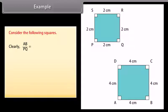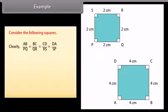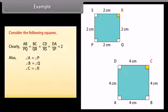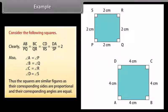Example: consider the following squares. Clearly AB/PQ = BC/QR = CD/RS = DA/SP = 2. Also, angle A = angle P, angle B = angle Q, angle C = angle R, angle D = angle S. Thus, these squares are similar figures as their corresponding sides are proportional and their corresponding angles are equal.